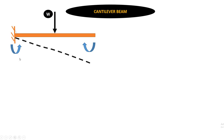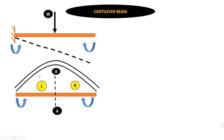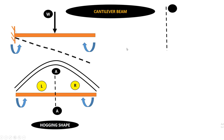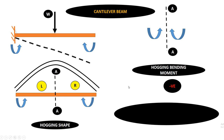At the fixed end, we will have the resistive moment, which will be anticlockwise. So if I take a section, the left part has anticlockwise moment and the right part has clockwise moment — that gives a hogging shape. For a hogging shape, with anticlockwise moment on the left and clockwise moment on the right, the moment is a hogging bending moment, which is negative.